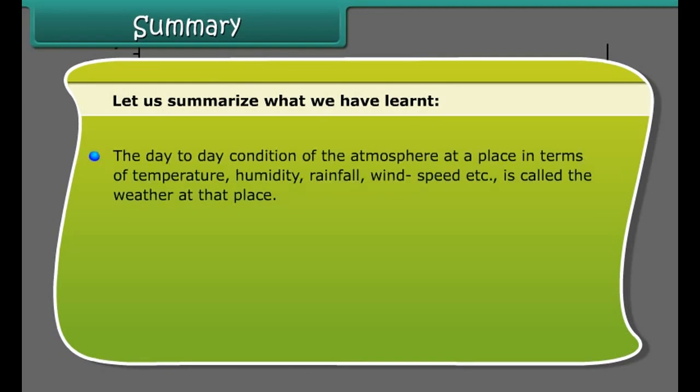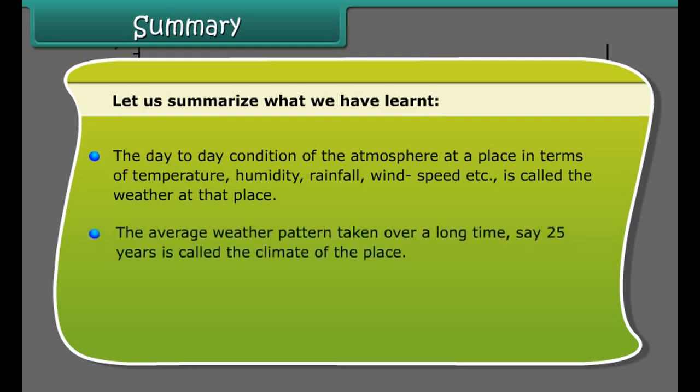Summary: the day-to-day condition of the atmosphere at a place in terms of temperature, humidity, rainfall, wind speed, etc., is called the weather at that place. The average weather pattern taken over a long time — say 25 years — is called the climate of the place.